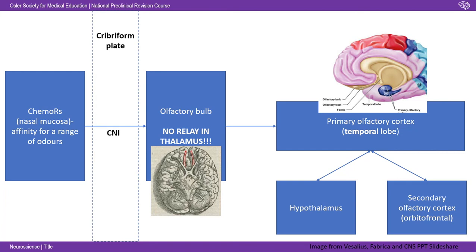Projections from the olfactory bulb go straight to the primary olfactory cortex, which is in the temporal lobe — though it's spread over a couple of areas. That has reciprocal connections with the hypothalamus and the secondary olfactory cortex in the orbitofrontal cortex. The key bits to know: cribriform plate, cranial nerve one, olfactory bulb, no relay in the thalamus, and the temporal lobe as the location of the primary olfactory cortex.